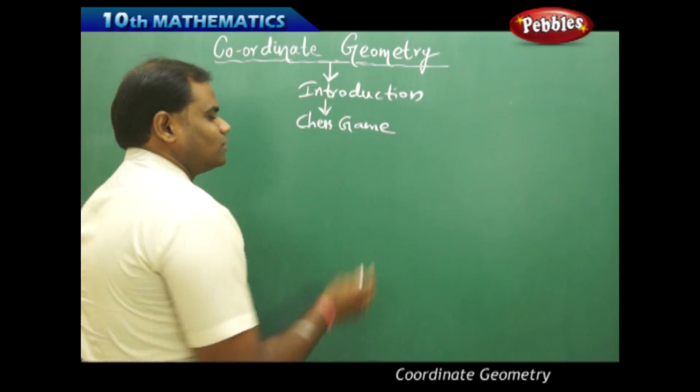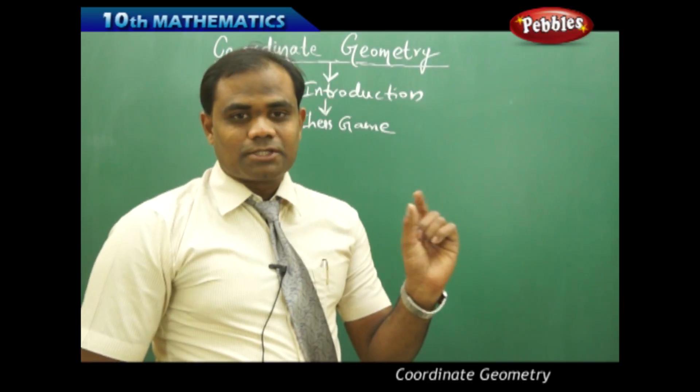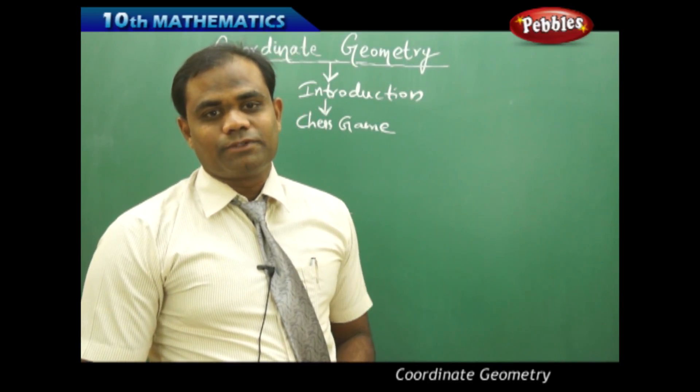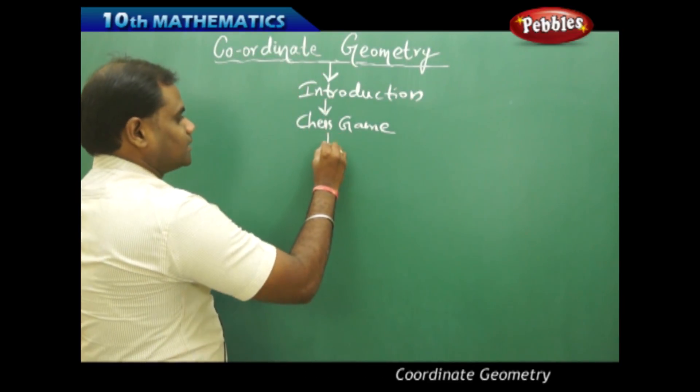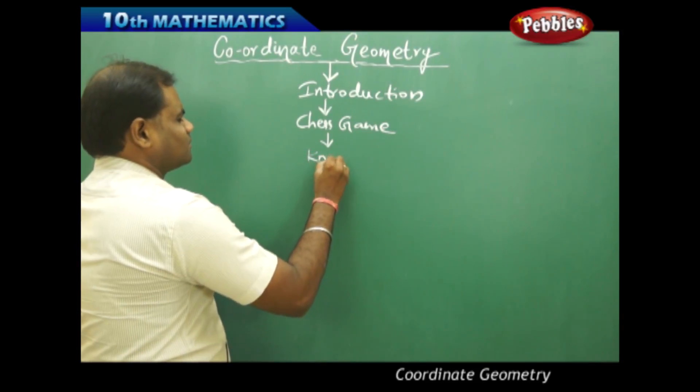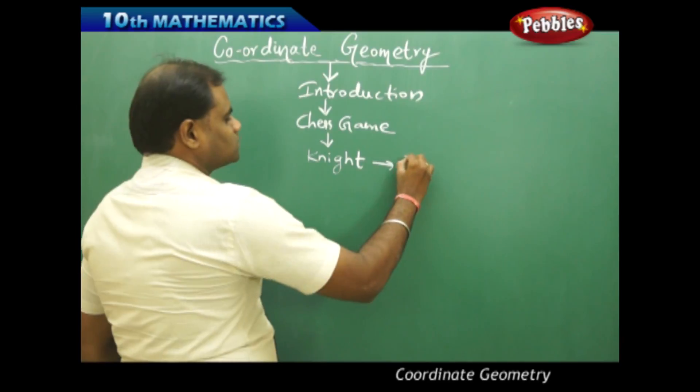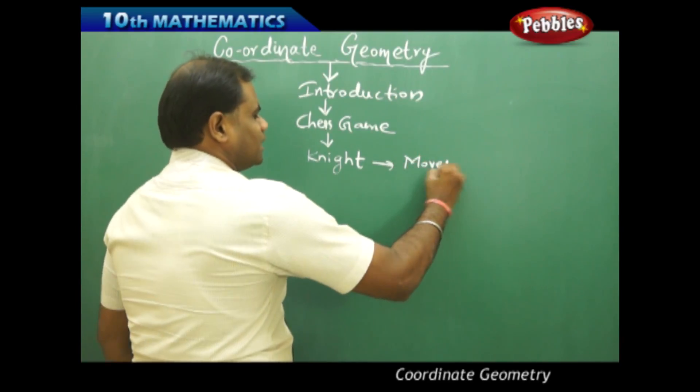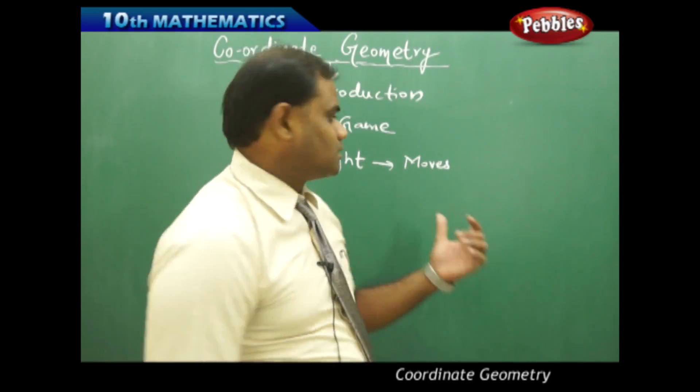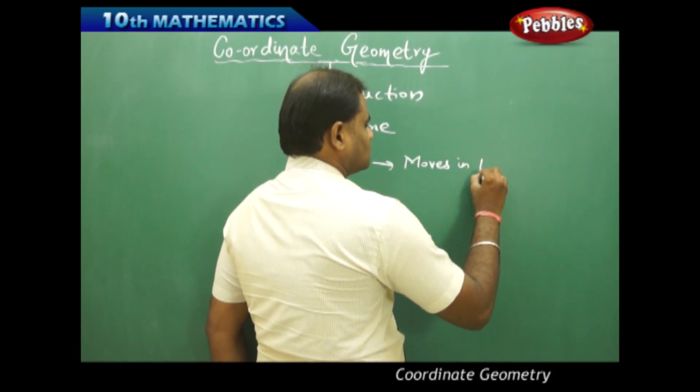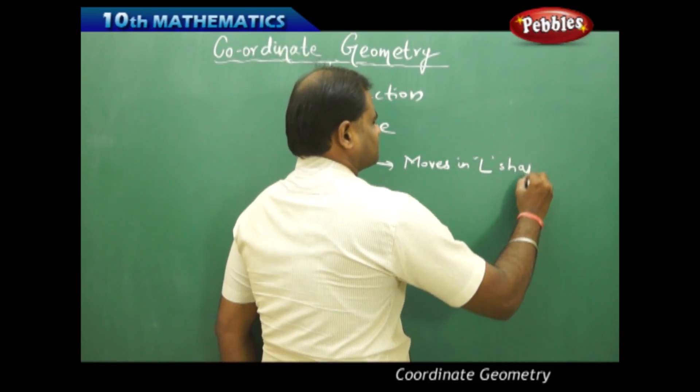Then we know that there are different pieces which have different rules in the game of chess. Say for example, I take the knight. The knight in the chess game always moves in an L-shaped manner. We know that this moves in L-shaped manner.